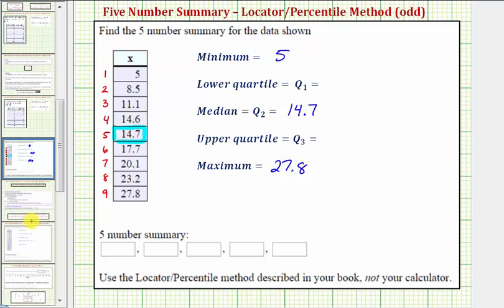So in our case, because we have nine data values, we would take 9 divided by 2, which is equal to 4.5, round this up to the next whole number, which would be 5, which means the median is in the fifth position, which it is.